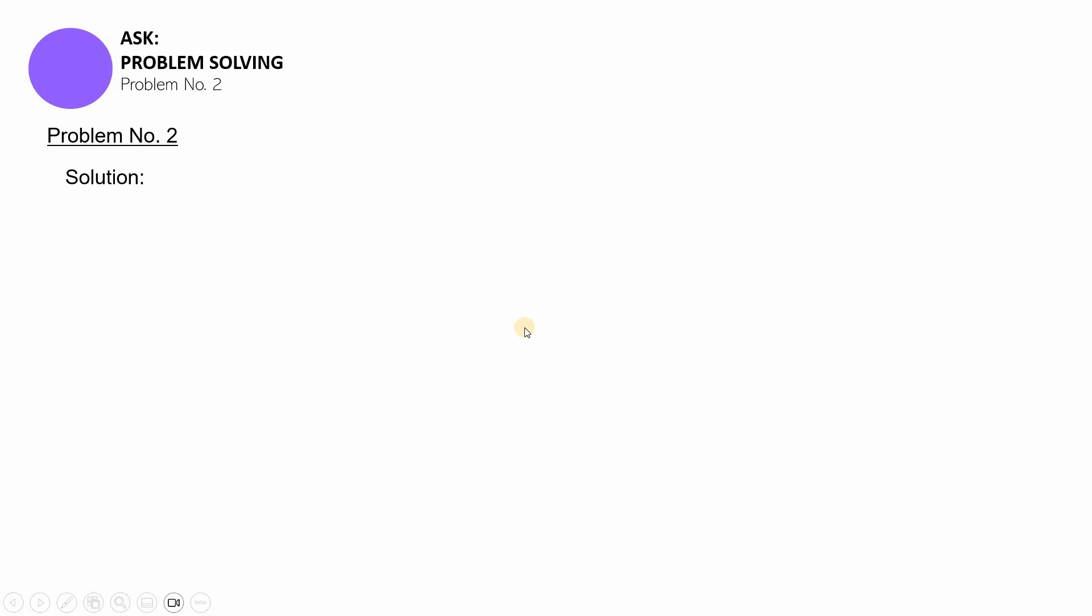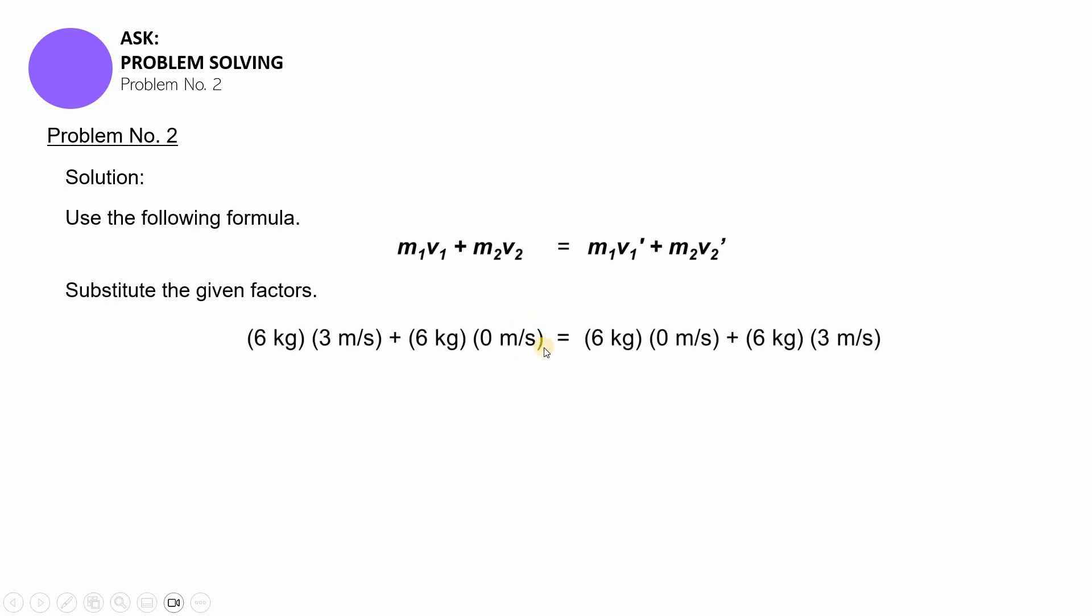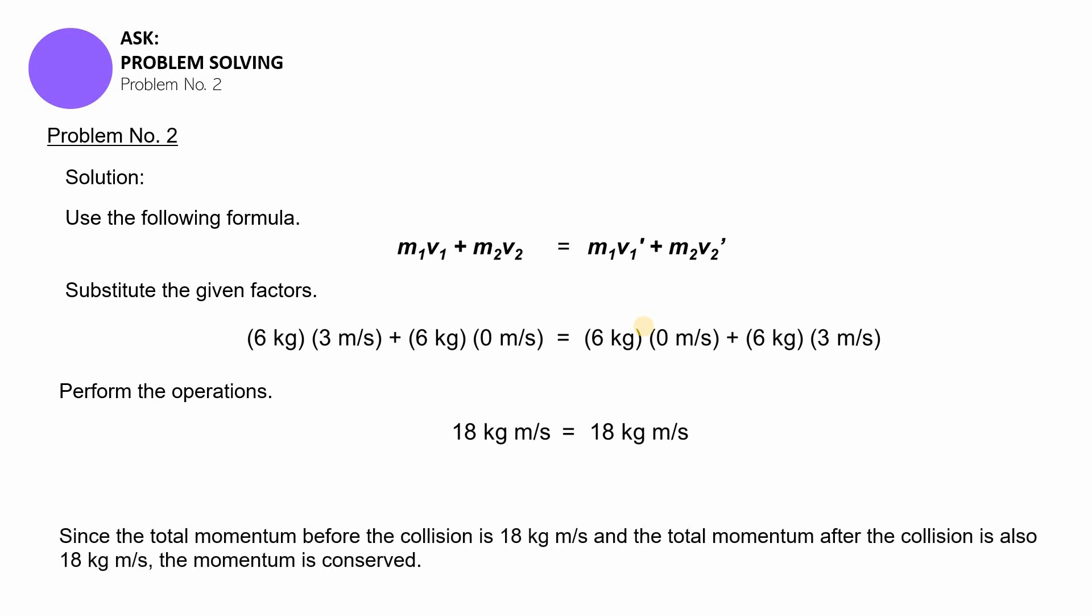Now, for the solution, we'll be using the following formula. And then, we'll be substituting the given. So, I'm telling you, we're not using 2.5. We're gonna use 3 meters per second. You substitute them and then, you carry out the operations and you're gonna get 18 kilograms meters per second on both sides. Equal sila. So, ito ang ibig sabihin nun? Nakonserve yung momentum. Walang nawala, walang nadagdag.